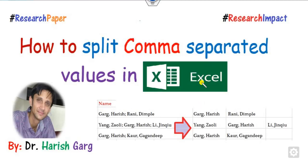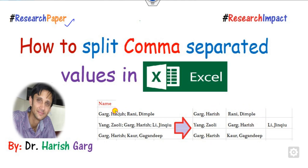Hello everyone, welcome to the next video on research paper writing. Today we will discuss how, for example, if you have a paper with different author names like Garg, Hrish, and Dimple Rani and so on, how you can convert all these authors into Excel with names placed in different columns.